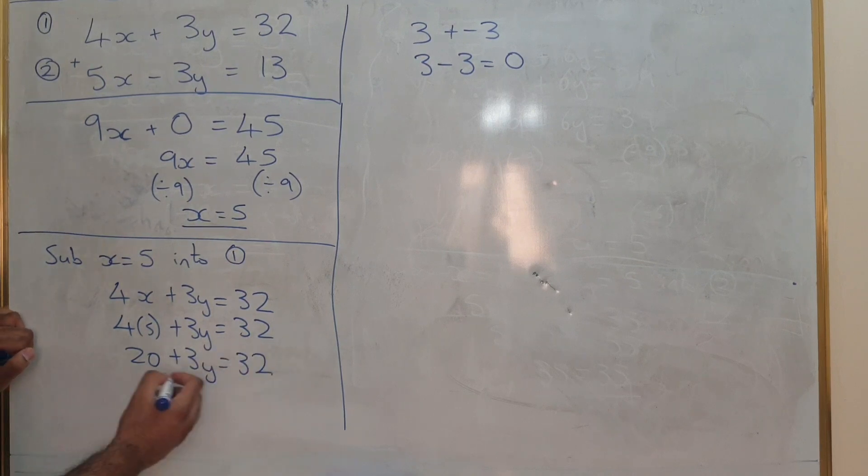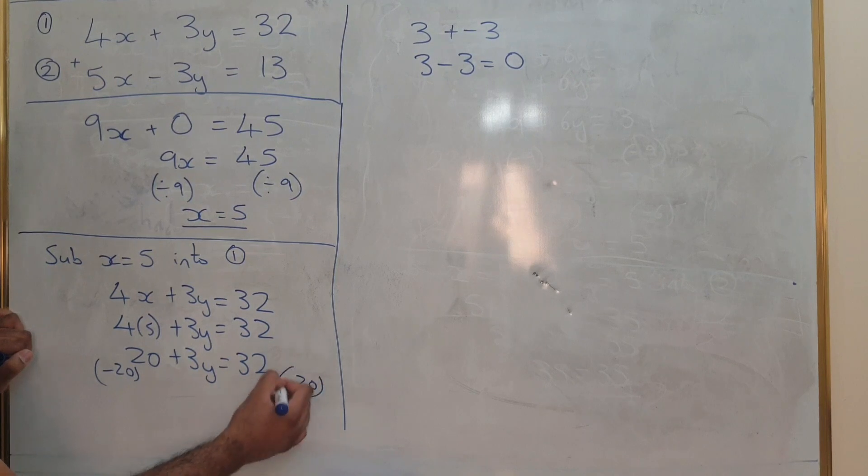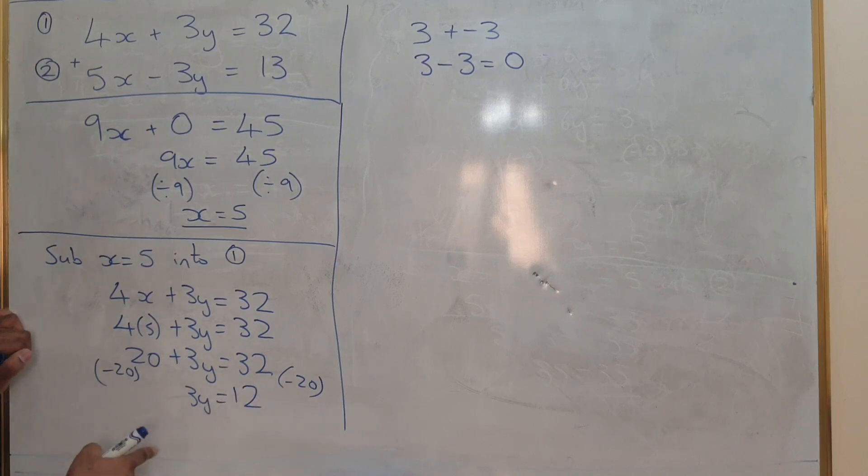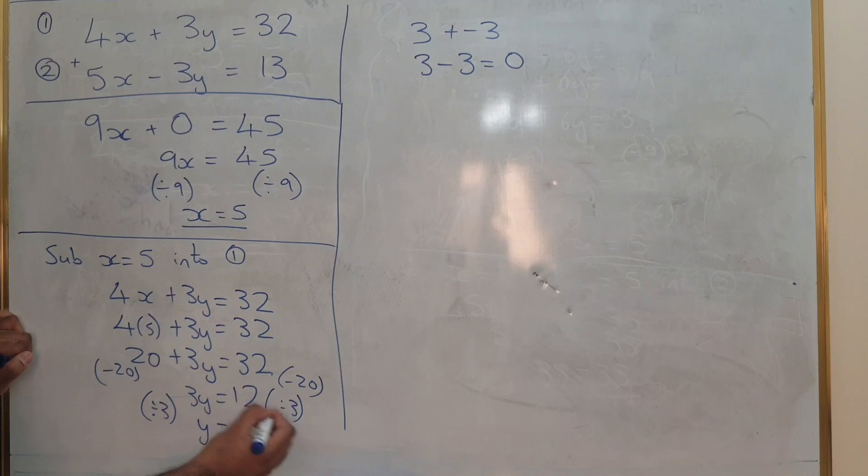If you subtract 20 from both sides or minus 20, 3y equals 12. And then if you want to work out y on its own, you're going to divide both sides by 3.